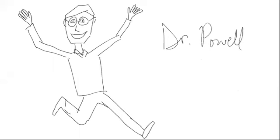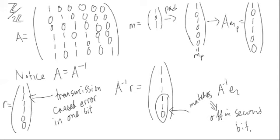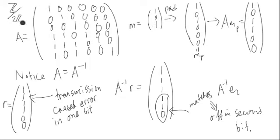Welcome to a lesson with Dr. Powell. Let's take a look at an example of coset syndrome detection when we're sending a message. Let's suppose that our messages originally start out as just three bits long with ones and zeros, and we're going to be thinking about arithmetic mod 2.